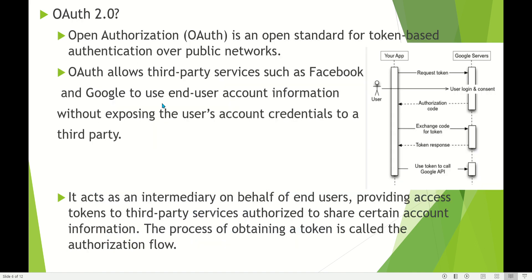OAuth 2.0 is an open standard for token-based authentication over public networks. OAuth allows third-party services such as Facebook and Google to use end-user account information without exposing the user's account credentials to a third party, by using a token. The token acts as an intermediary on behalf of end users, providing access tokens to third-party services authorized to share certain account information. The process of obtaining a token is called an authorization flow.